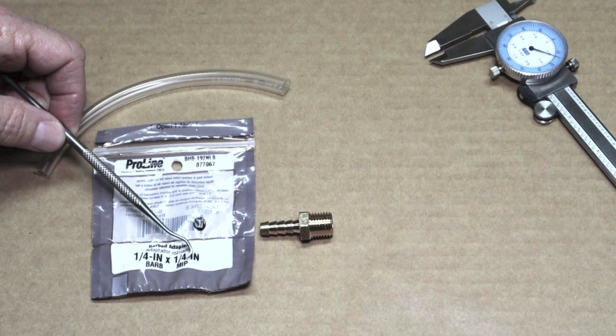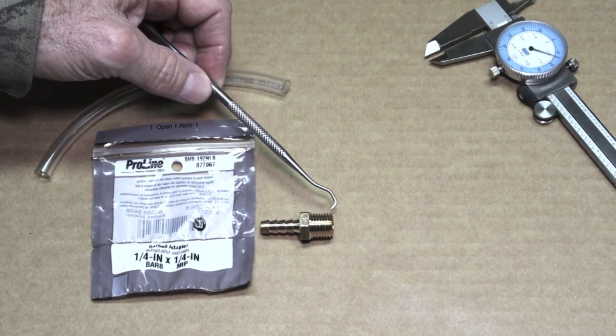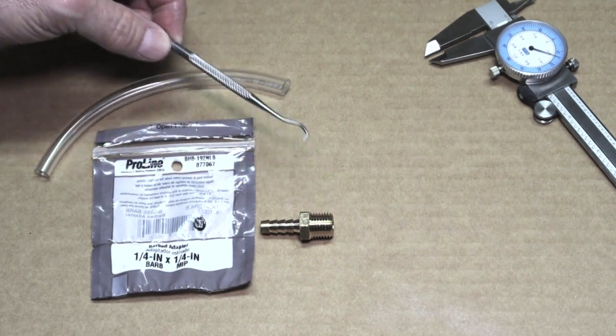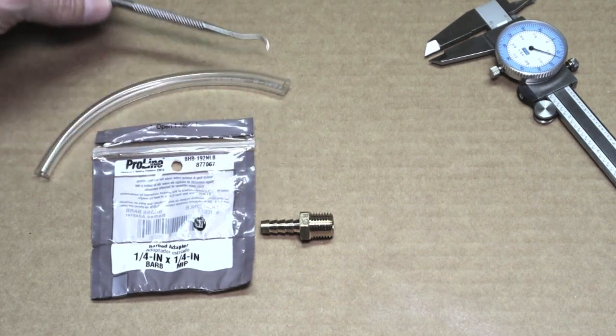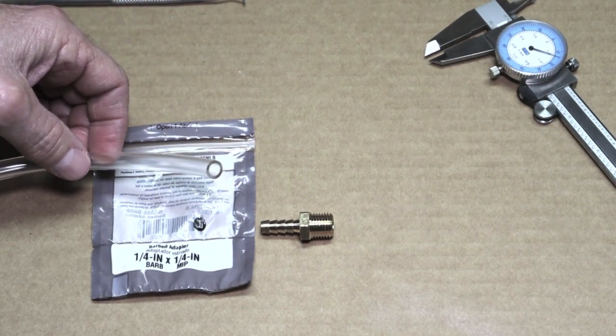In the United States, male iron pipe is the exact same thing as NPT or National Pipe Thread. This is a quarter inch in size.